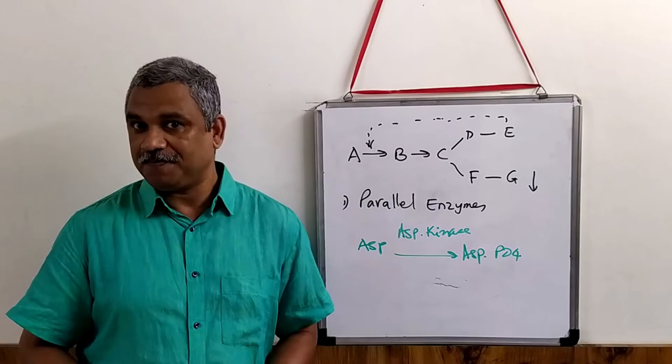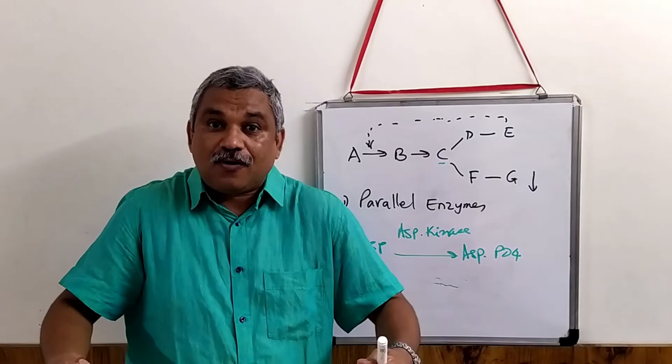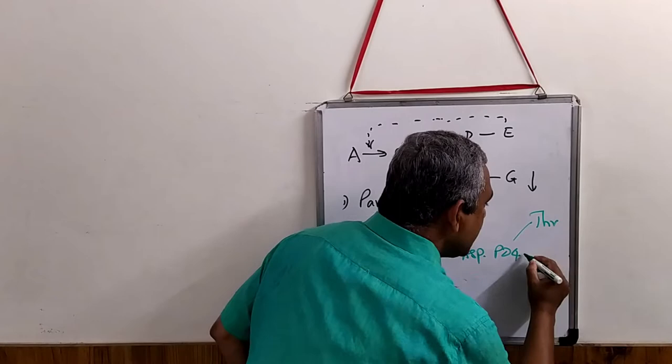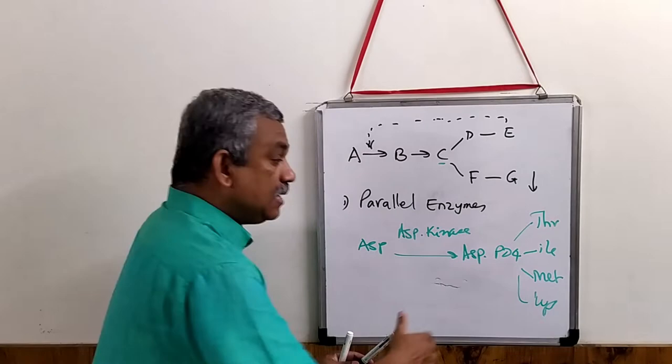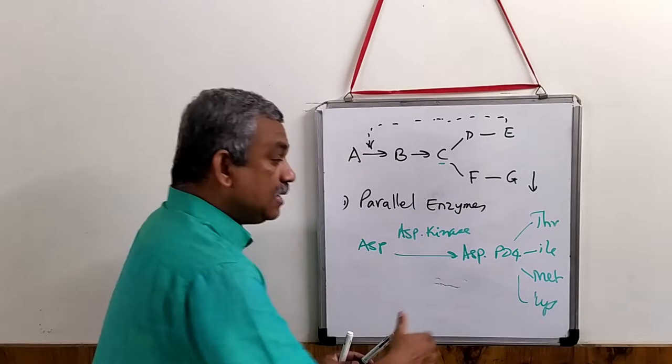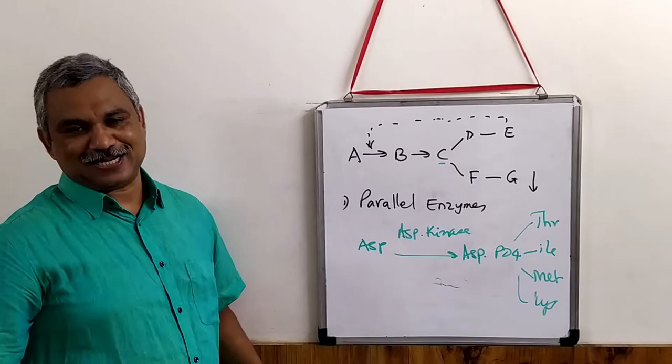Once aspartyl phosphate is formed — that is equivalent to C, which is the starting point for the formation of many amino acids — from here you can have threonine, isoleucine, methionine, and lysine. All these amino acids are formed from aspartyl phosphate. Therefore, if one of these final products inhibits this enzyme, there will be a decrease in the production of isoleucine, methionine, lysine, etc.